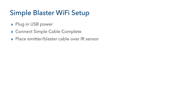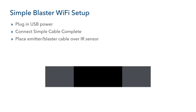To place the emitter cable, we need to find the IR sensor of the device we wish to control. We can find the IR sensor by using a flashlight and shining the light across the front of the device, usually around its display, until you can see a small light bulb — that is the device's IR sensor. You can then place the emitter directly over the IR sensor.